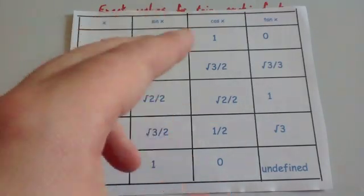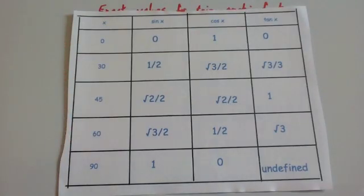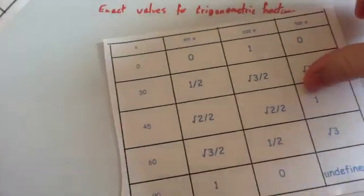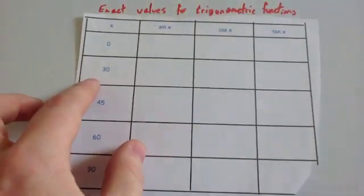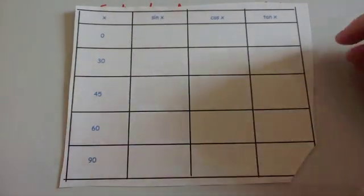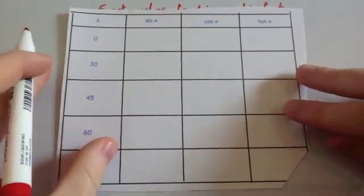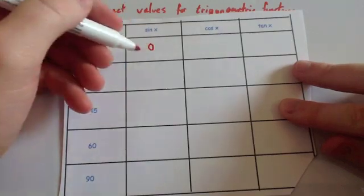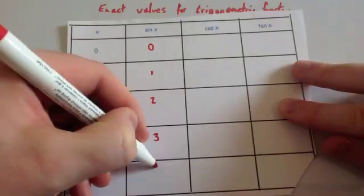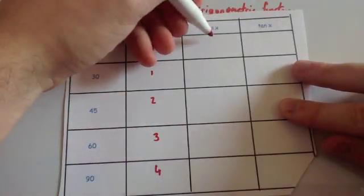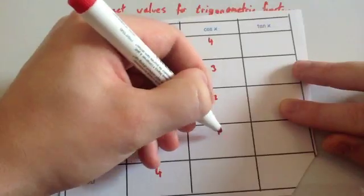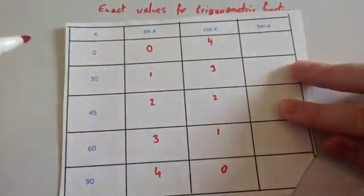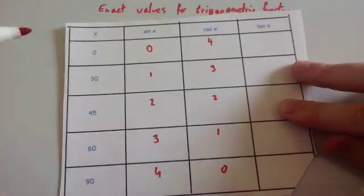You need to know all of these trig values exactly — I tell my classes to learn them. Here's a quick way to work them out, given to me by my colleague Vicky. Start with sine of 0 is 0, then write 1, 2, 3, 4 for sine and 4, 3, 2, 1, 0 for cosine.